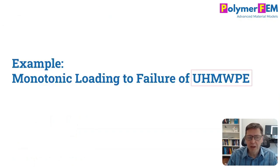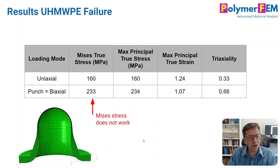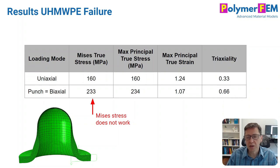Back to my example — I wanted to see how well this works for a given thermoplastic material I have data for. I'm selecting ultra high molecular weight polyethylene, a polymer I've tested and worked with a lot. Here's some data from a previous video where I tested it in uniaxial tension to failure and a biaxial punch-to-failure test. I know the stress state at failure for both loading modes. What I showed before is that the Mises stress is not the same at failure — in fact, the Mises stress is higher in biaxial loading than in uniaxial loading.